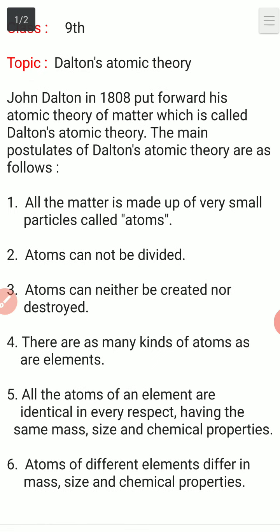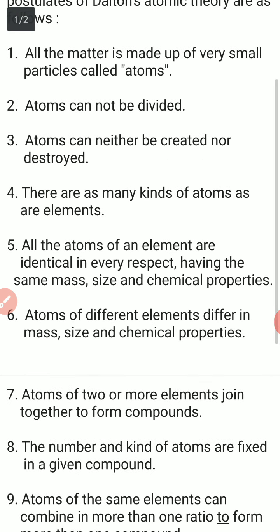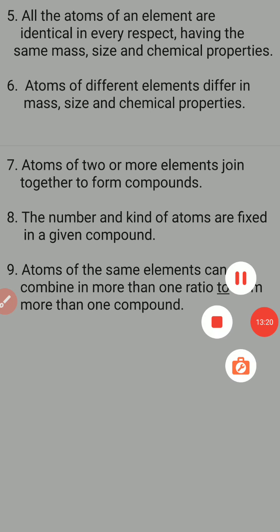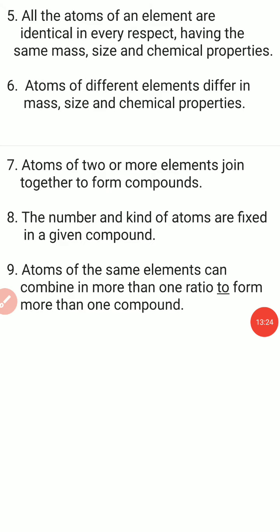These were the main postulates of Dalton's Atomic Theory: all matter is made up of very small particles called atoms; atoms cannot be divided; atoms can neither be created nor destroyed; there are as many kinds of atoms as there are elements; all atoms of an element are identical in mass, size, and chemical properties; atoms of different elements differ in mass, size, and chemical properties; atoms of two or more elements join together to form compounds; the number and kind of atoms are fixed in a given compound; and atoms of the same elements can combine in more than one ratio to form more than one compound. Dear students, this was all about Dalton's Atomic Theory. Thanks.